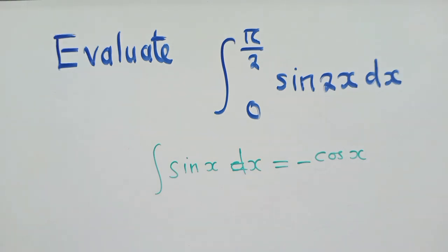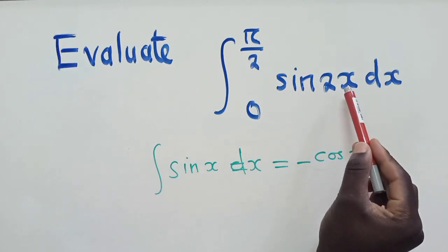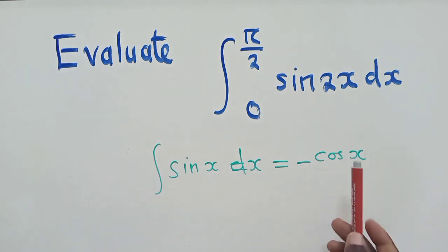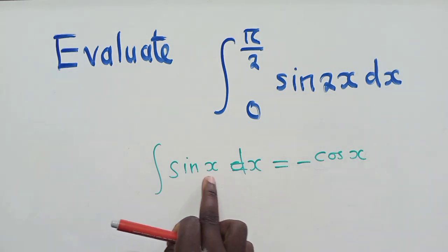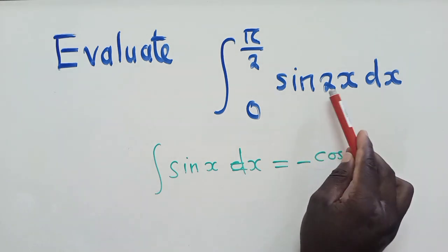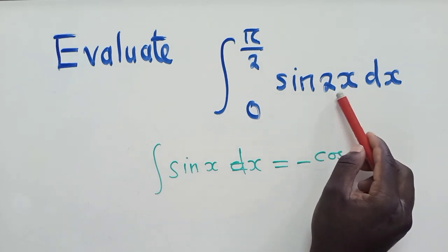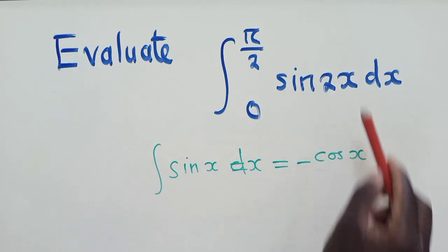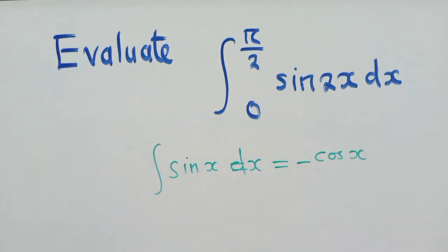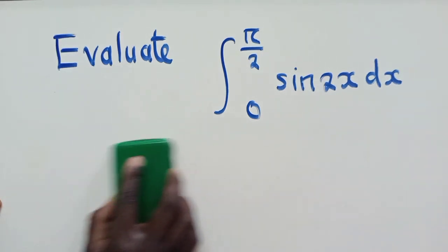All right, so after knowing this, we can try and change what is here to be equal to one letter. Since here we have got 2x, so we can make it be equal to another letter, not x. It may be u, t, whichever letter you want apart from x. So this is what we're going to do.